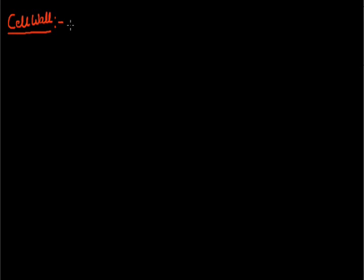Have a nice day students. Today we discuss about the cell wall. Cell wall is the outermost layer in the plant cell. It is made up of cellulose. This is the outermost layer in the case of plant cell.